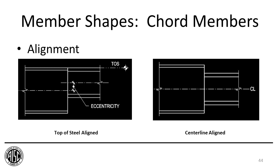There are also alignment considerations: are you aligning top of steel, as when a top chord supports decking? In that case, you'll have eccentricity only at the bottom where there's an offset between flanges — this happens when you change chord sizes at a splice. The bottom chord might often be centerline-aligned, in which case you don't have an eccentricity but you have potential misalignment of both the top and bottom flange. These are easy to deal with using filler plates, but you need to consider that in the design of your truss and truss connections.